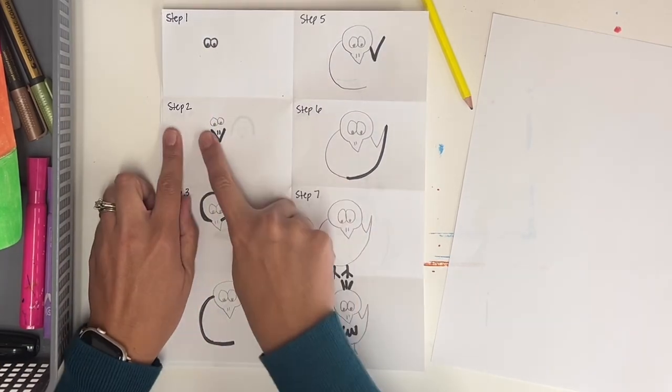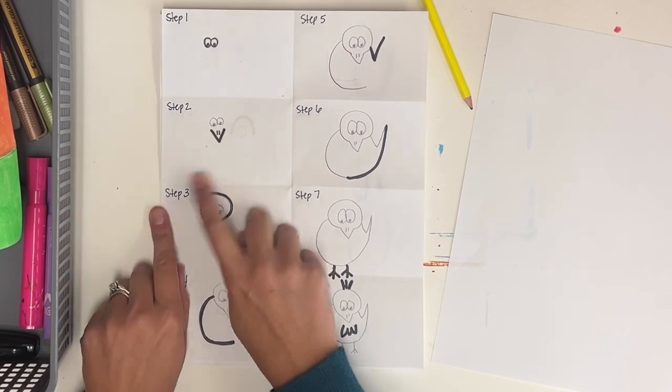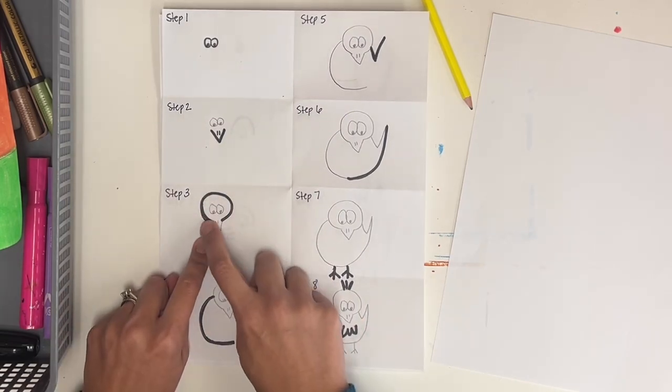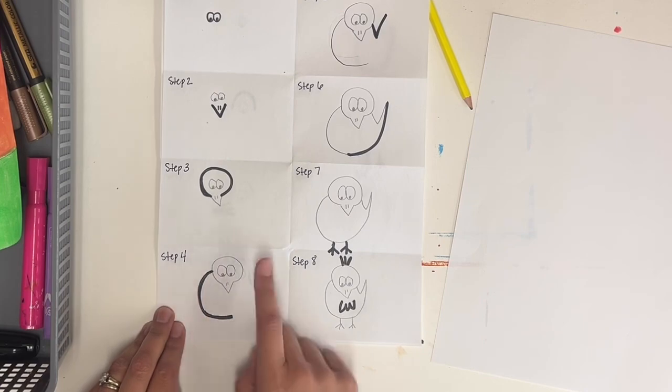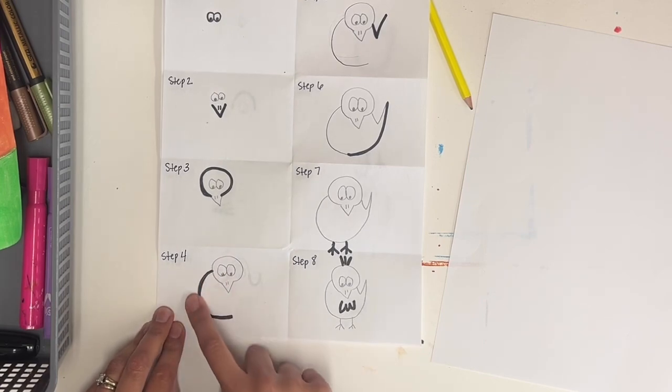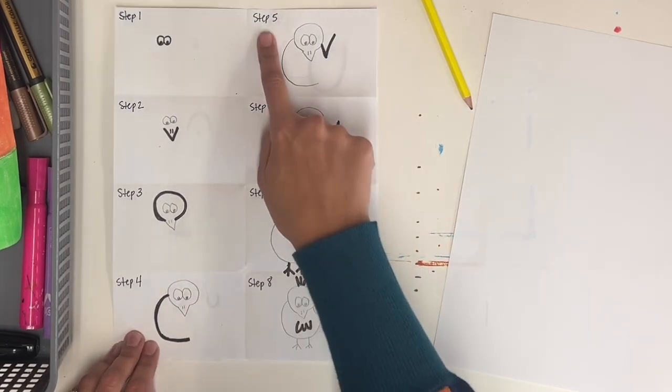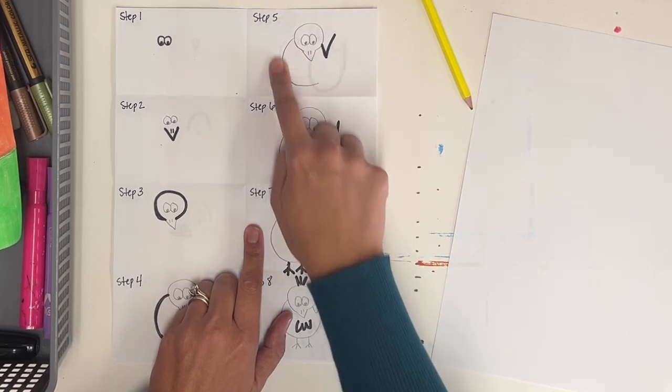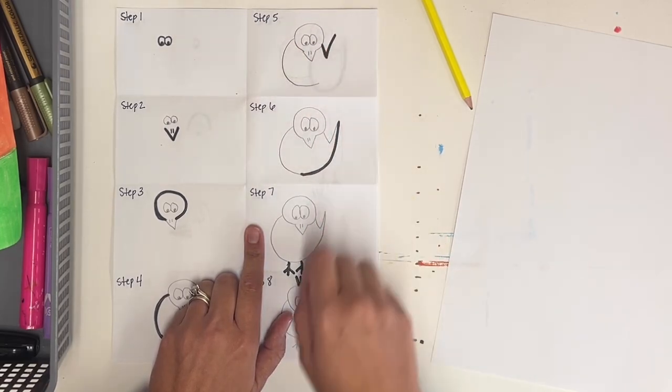Step two, the eyes are already drawn, so you're going to draw the beak next. Step three, you draw the head that goes around. It connects to the beak, and it goes around the eyes. Step four, you draw the C. So letter C, this is part of the body. Step five, you can see the head, the eyes, the beak, and the C are already drawn. And then you draw this V, or what looks kind of like a check mark.